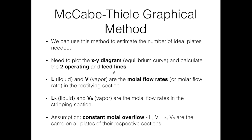From previous videos, you know that to estimate this equilibrium curve we have two methods: either using the combination of Raoult's law, Dalton's law, and Henry's law, or using the relative volatility method — that is, using the alpha constant.